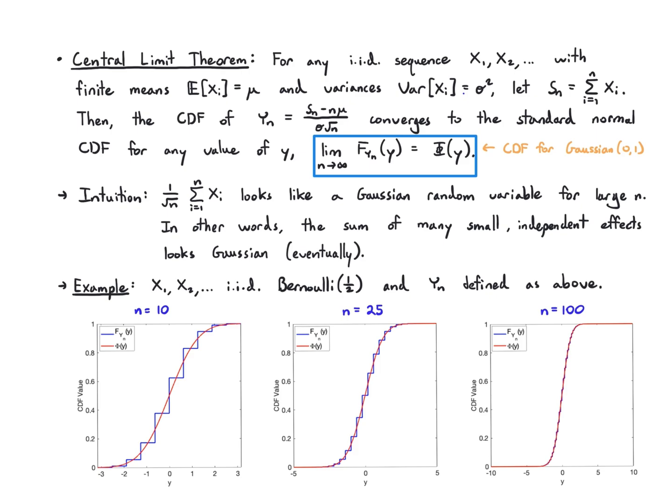So all it's saying is that if you add up a lot of things which are independent, and you normalize it correctly, you'll get a Gaussian CDF.